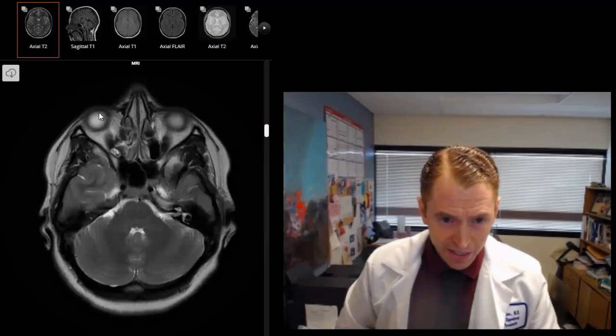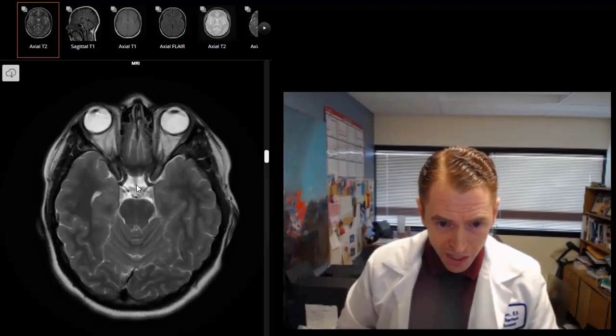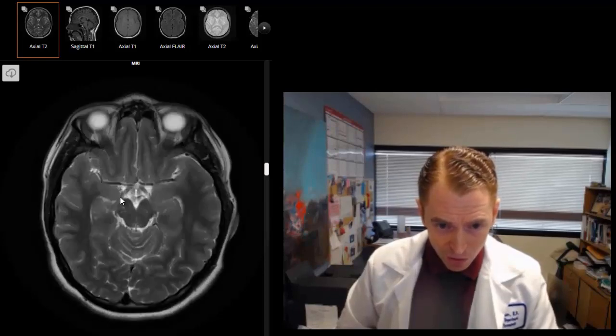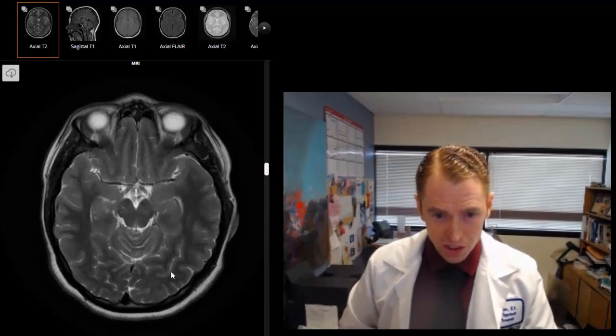Sometimes people can have tunnel vision, where they're losing their visual fields to the outside. These are the eyes and the optic nerves coming back towards the optic chiasm. It's a little bit difficult to see the optic tracts, which come back further towards the occipital lobes.